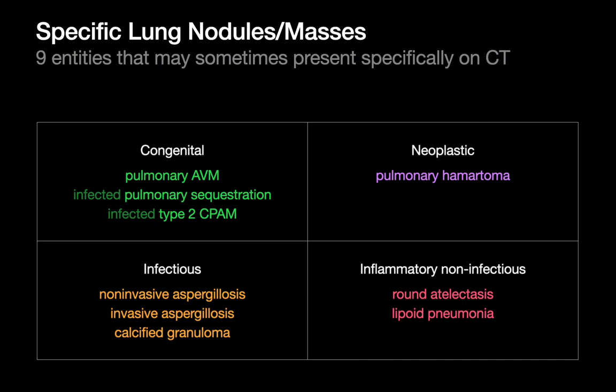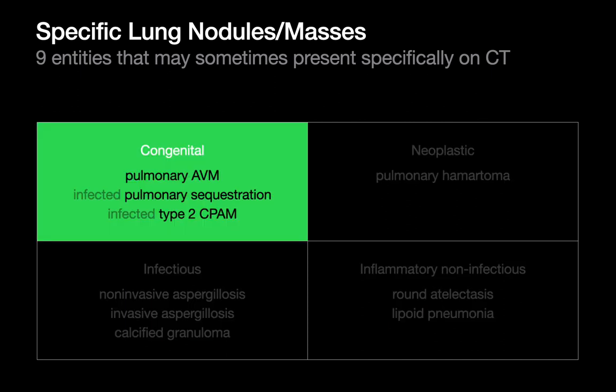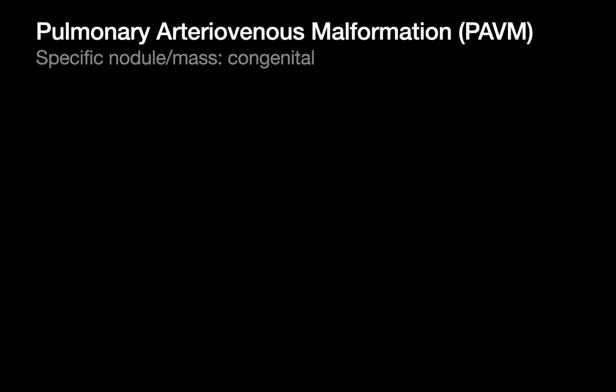When it comes to entities that can present specifically on CT imaging as a nodule or mass, there are basically nine that we should be prepared to look for. We're going to break them down into four categories: three congenital entities, one neoplastic benign entity, three infectious entities, and then two inflammatory non-infectious entities.